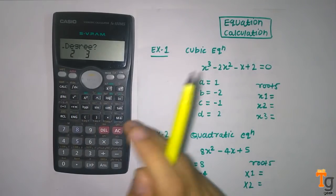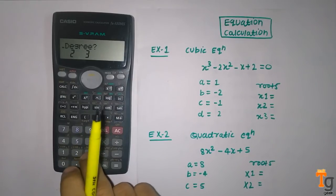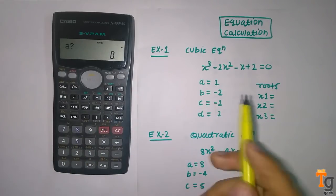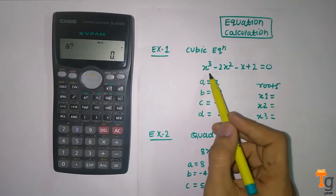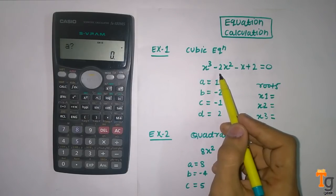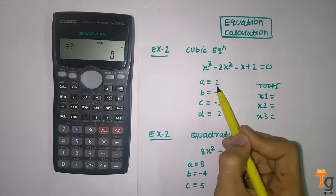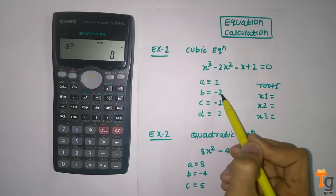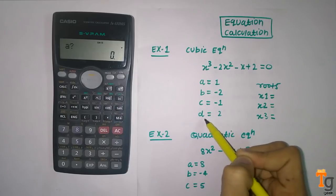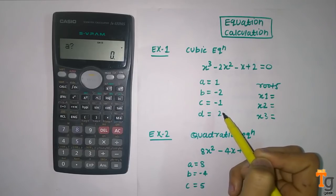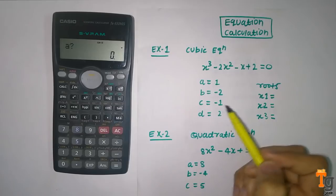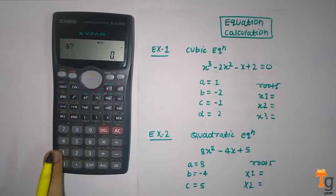Now compare your equation with the general form of cubic equation and you will find the value of a is 1, b is minus 2, c is minus 1, and d is 2. So now we have to enter the value for this. The value of a is 1, so we will enter 1.